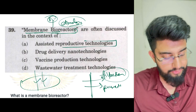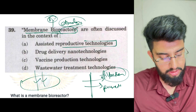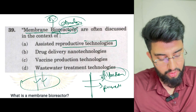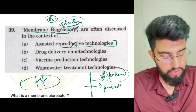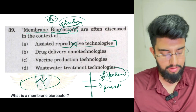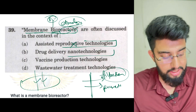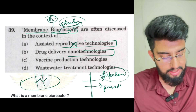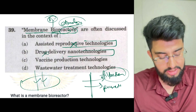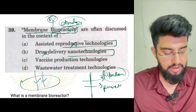Assisted reproductive technology — reactors, bioreactors, membrane — no direct linkages could be made here. Drug delivery, nanotechnology — no direct linkage can be made.